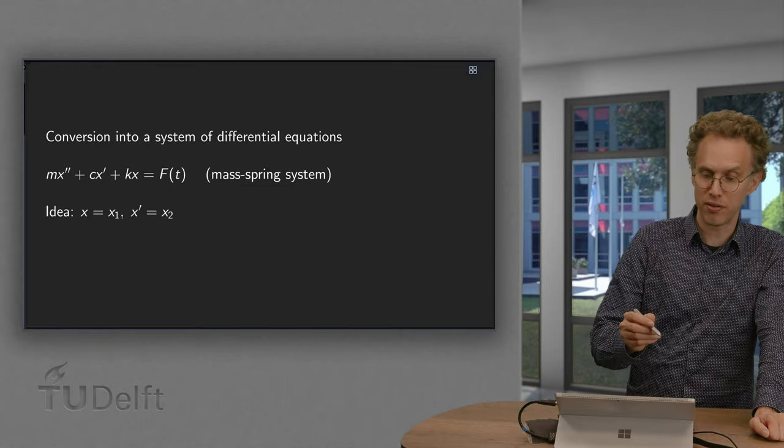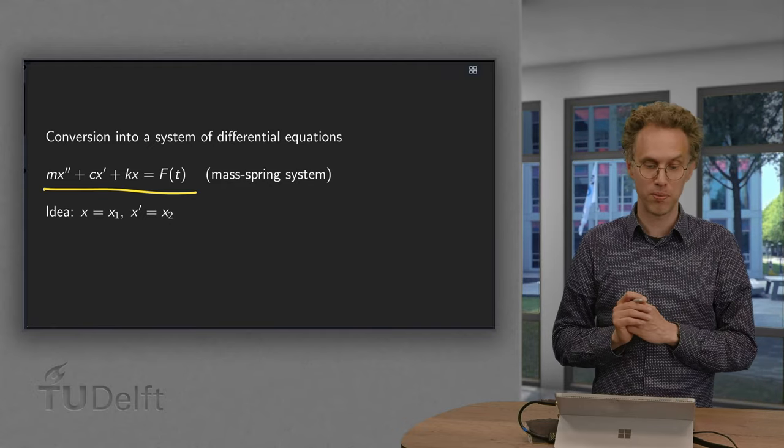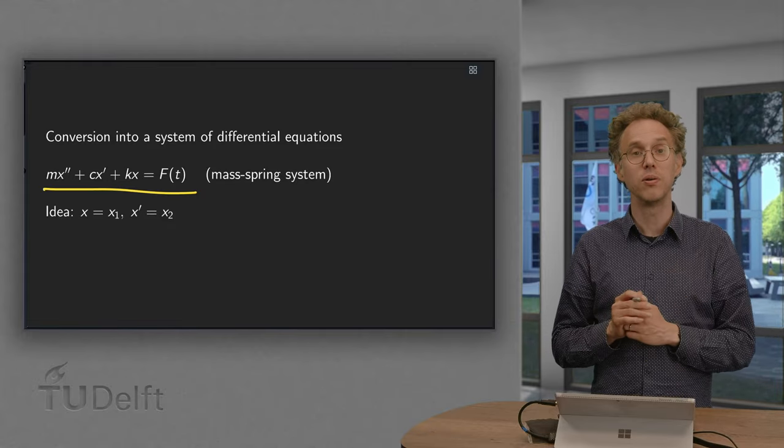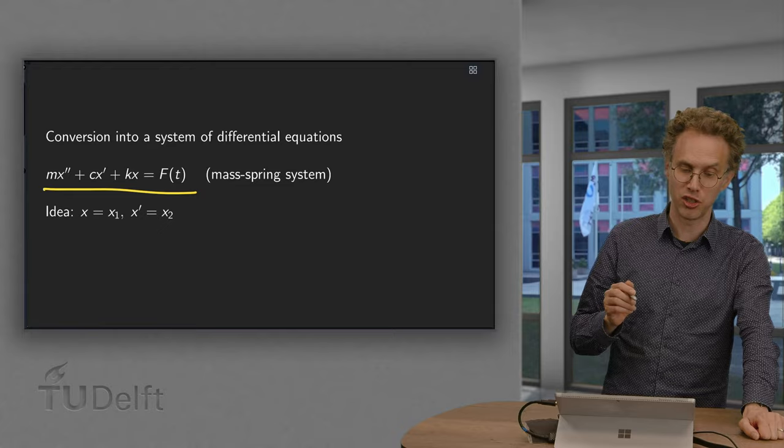Suppose we have our famous mass spring system. So, mx double prime plus c times x prime plus k times x equals f, external forcing. So, what is the idea? We can convert this into a system of differential equations.